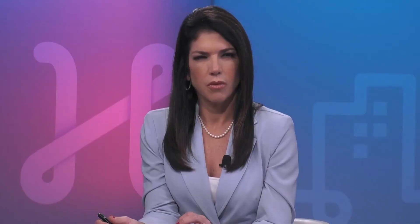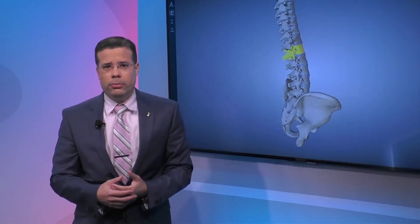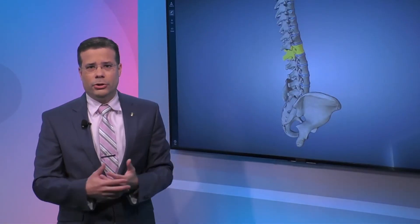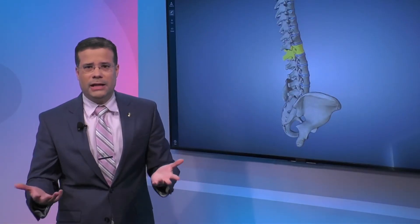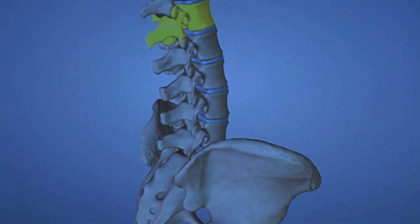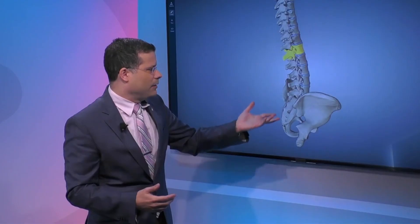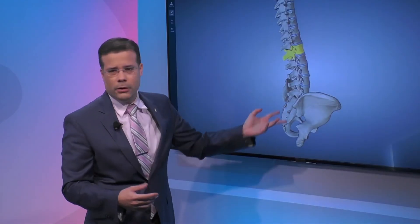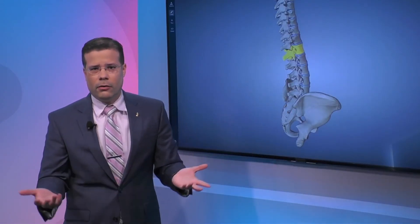If there are fractures in the back, we sometimes employ procedures such as kyphoplasty. That means we put cement into the spine to harden or seal the fracture, which allows the patients to get better.